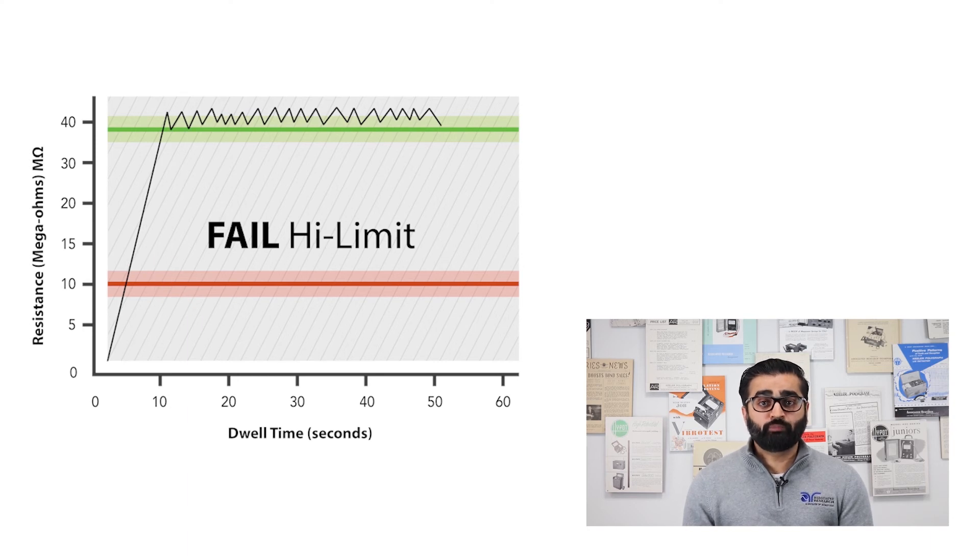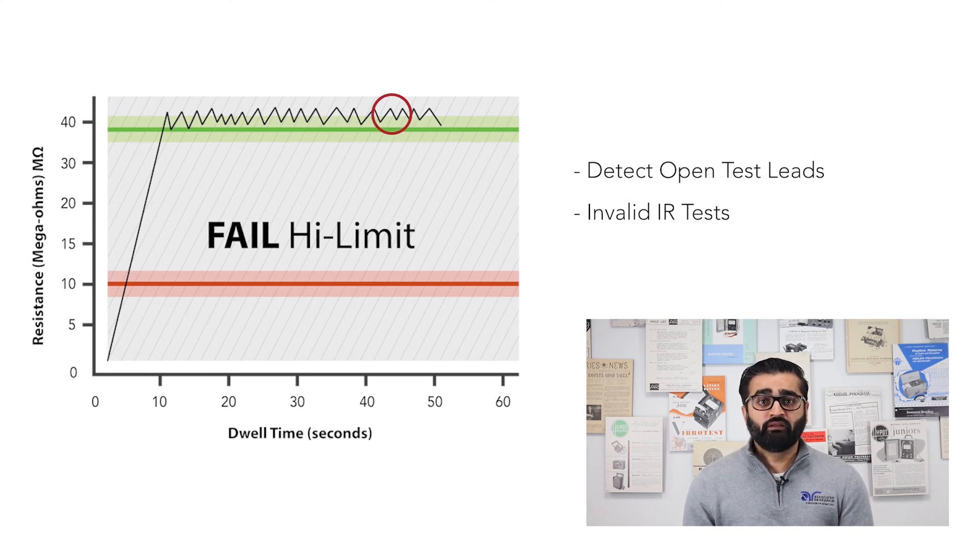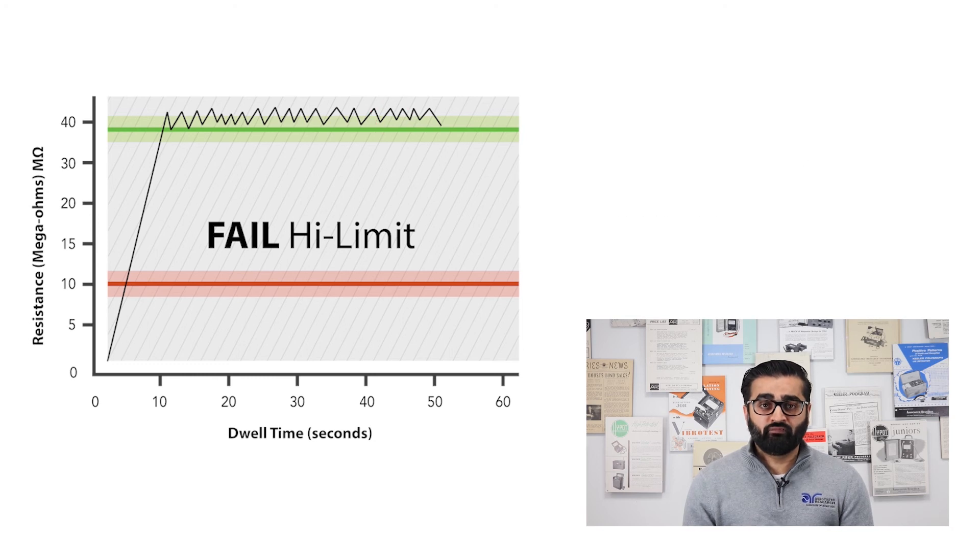To avoid any false passes, the high limit parameter is set for the resistance test. Having the test lead not connected properly could result in an open circuit or a very high resistance value. Again, desirable but an invalid test. The equipment will display a high limit failure.